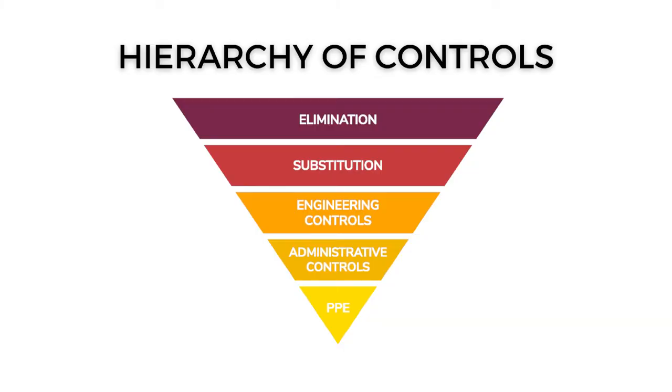So that's the basics of how the hierarchy of controls works. The controls can be a single control on their own, or multiple levels of control providing multiple lines of defense. Next time you're reducing risk, take a moment to notice which type of control you're utilizing. Thank you so much for watching, and I'll see you guys later!